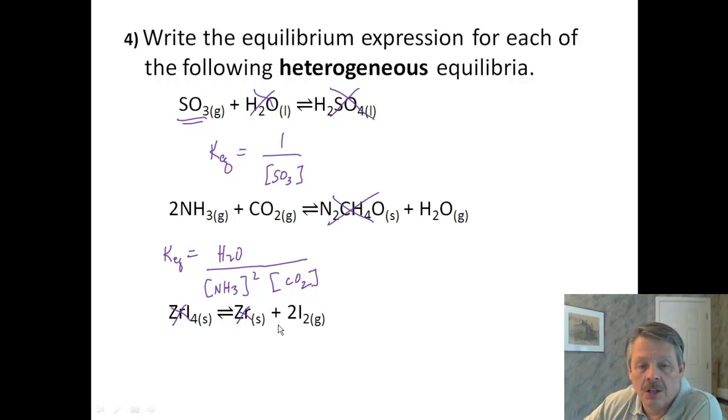How about your last one? Well, you notice that's a solid, and you notice that's a solid, so what are we left with? Well, our equilibrium constant is equal to the products, which is I2, and that has to be squared, and there are no reactants, so we don't put anything down there. So, it's over one. That's it for that one.